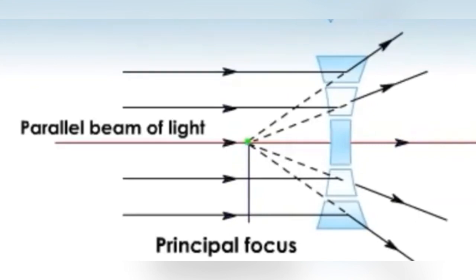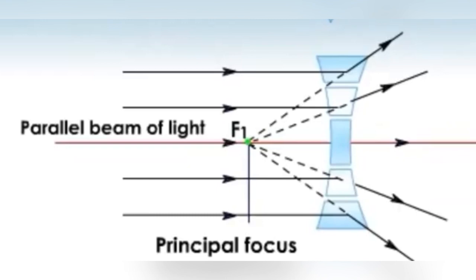In a concave lens, if you cut it into different portions, you can see that the upper portion has prisms with their base in the upward direction, and the lower portion has prisms with their base in the downward direction. Hence the upper portion bends rays upward and the lower portion bends rays downward. In effect, the rays appear to be coming from somewhere behind the lens — the rays appear to be diverged. This is how lenses converge or diverge the rays.